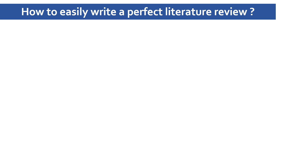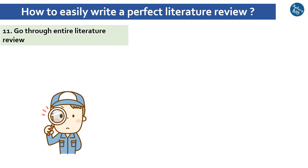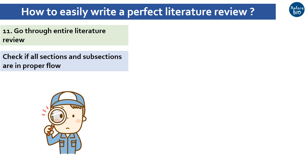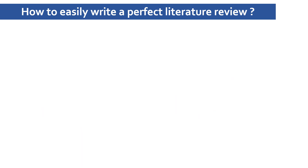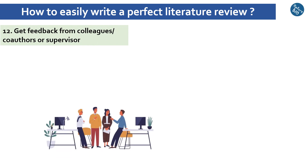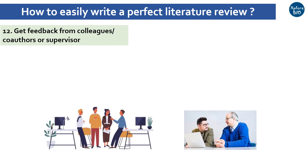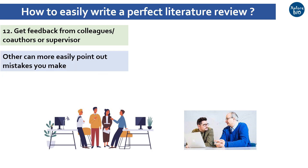Once you have finished writing the review of literature, go through the entire document to check that it reads with proper flow. The background, knowledge gap, and your hypothesis should be well connected. If required, revise and edit to ensure it is well structured, clear to understand, and free from grammatical errors. Once you are satisfied, get feedback from your peers, co-authors, or supervisor to refine your literature review, as some mistakes may go unnoticed by you but can be easily spotted by others.